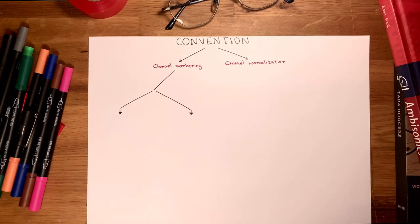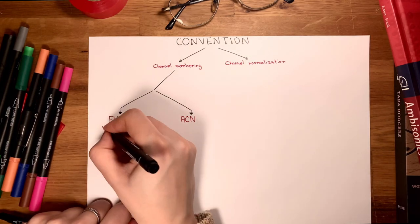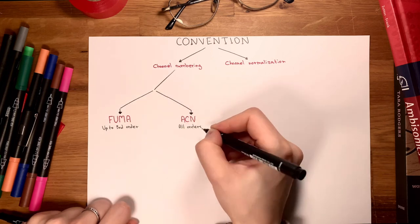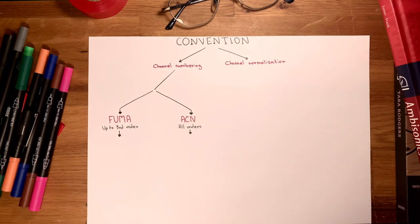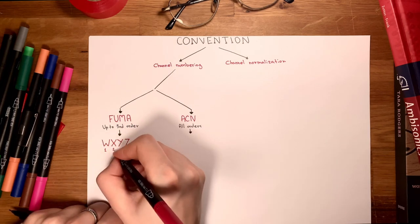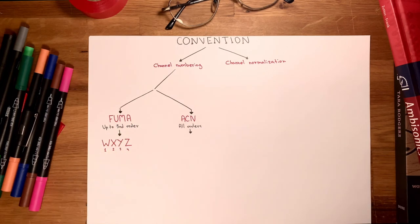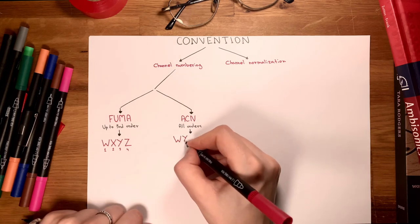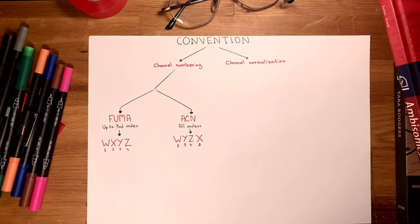There are two types of channel numbering: FuMa and ACN. FuMa is an older standard and is usually used up to third order. The channel order looks like this: W, X, Y, Z. ACN, or Ambisonics Channel Numbering, is a newer format used with all orders, and the channel order looks like this: W, Y, Z, X.